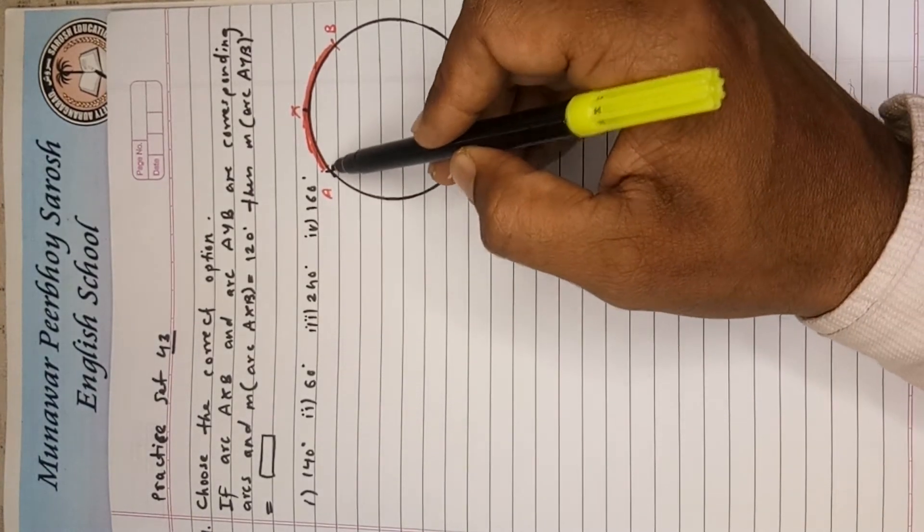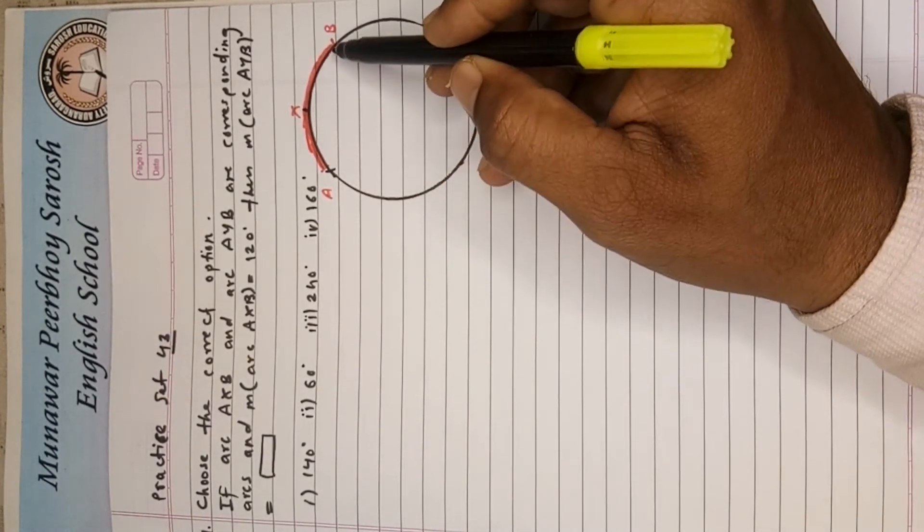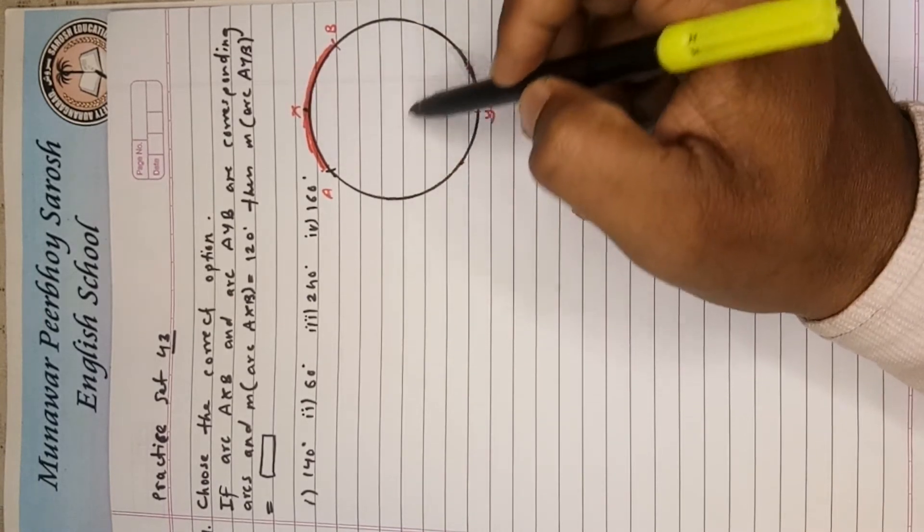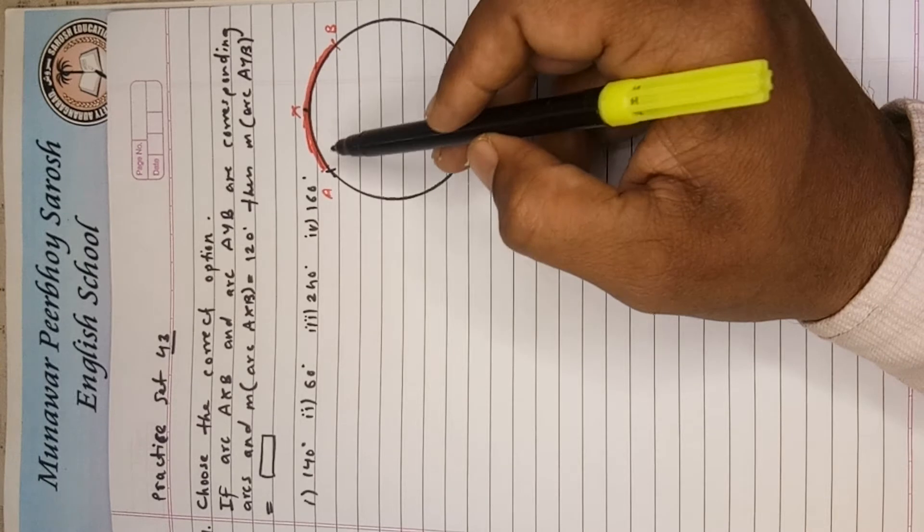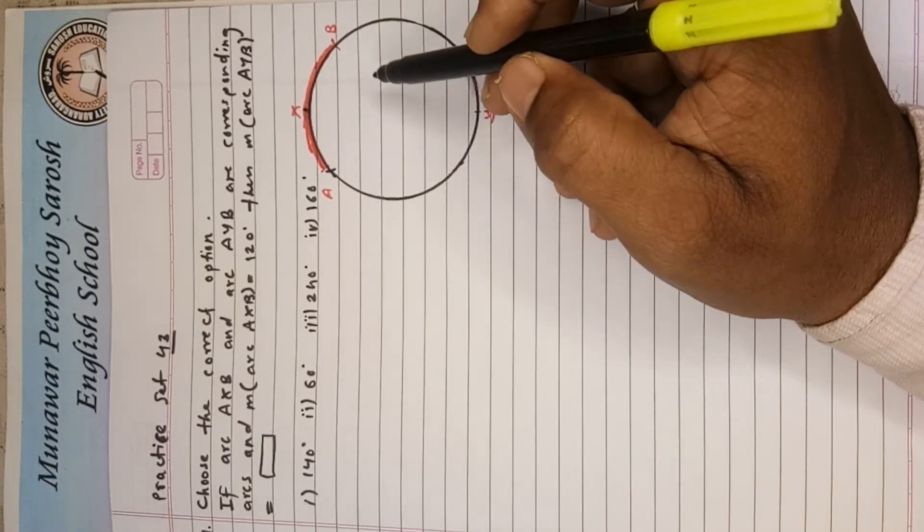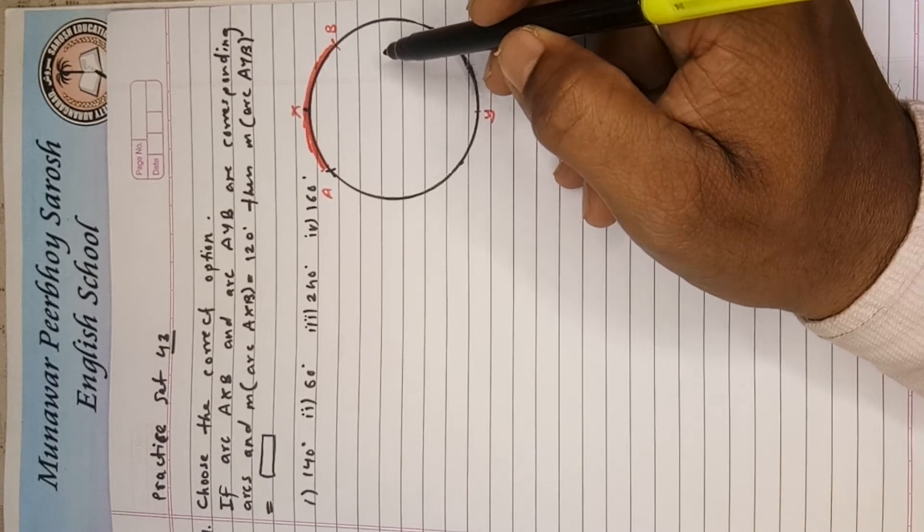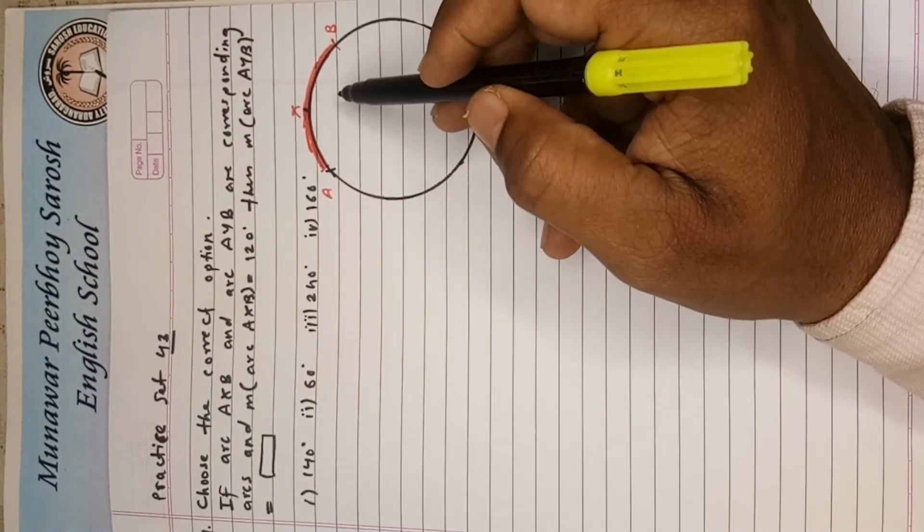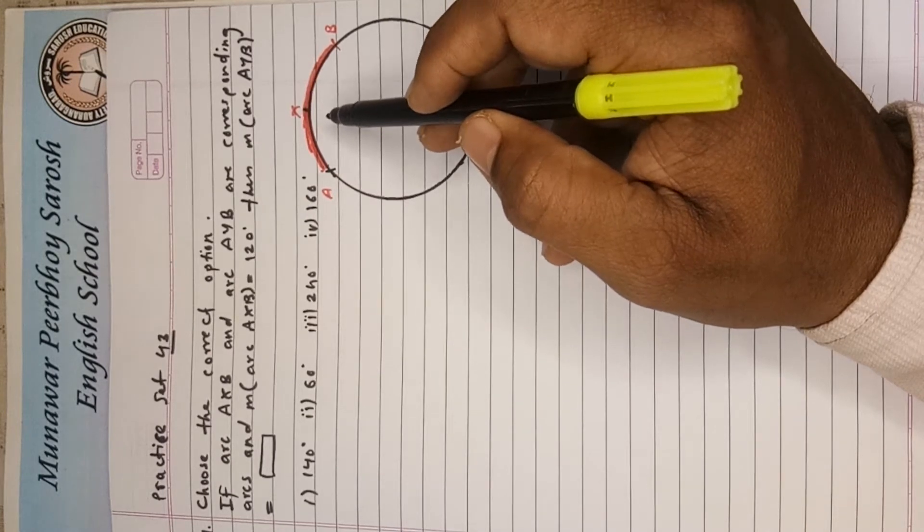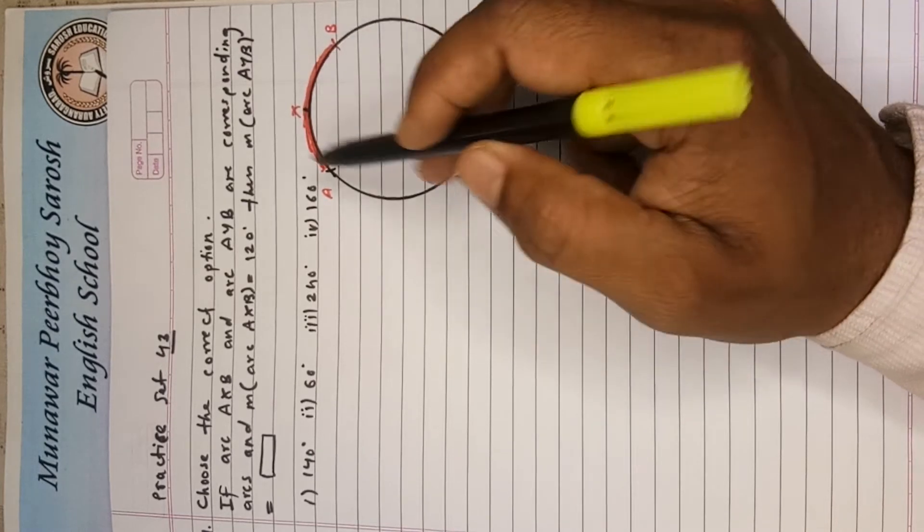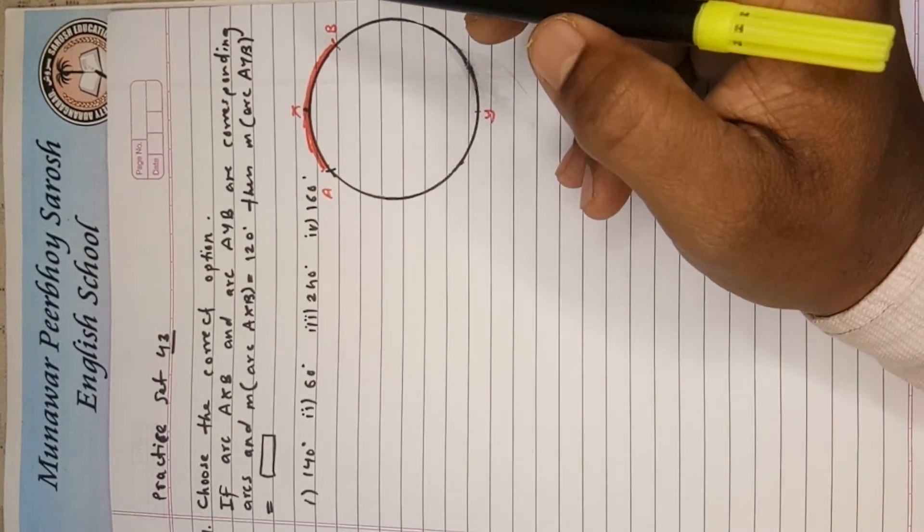And arc AXB is a minor arc. So this circle is composed of the two arcs, that is the minor arc and the major arc. Now keep in mind the measure of the minor arc plus major arc is always 360 degree if there are only two arcs in a circle.